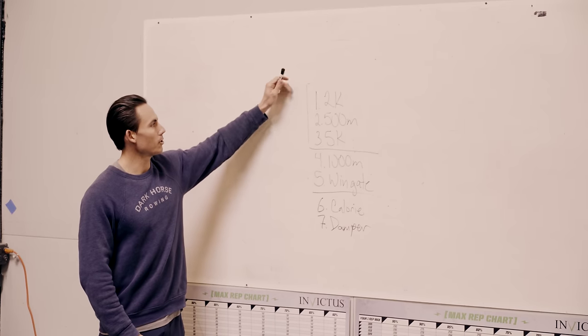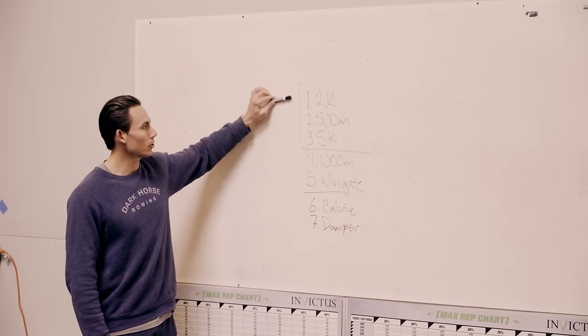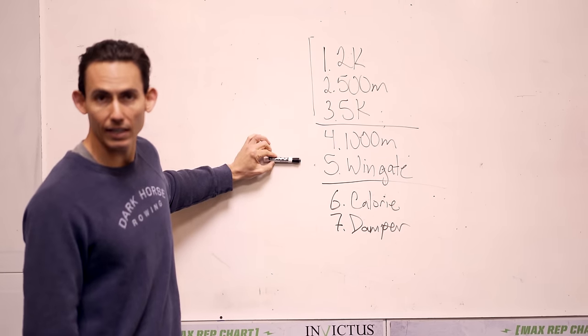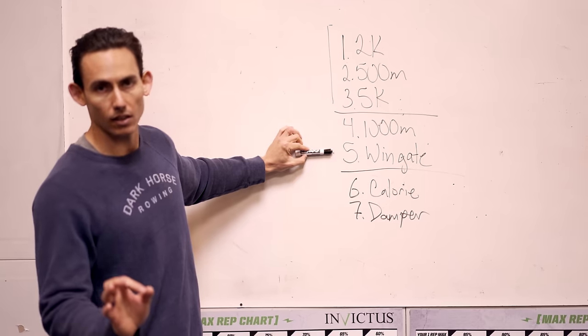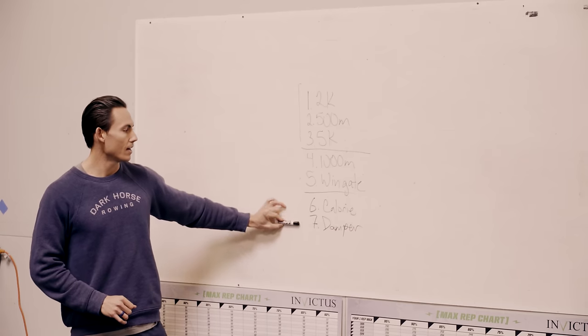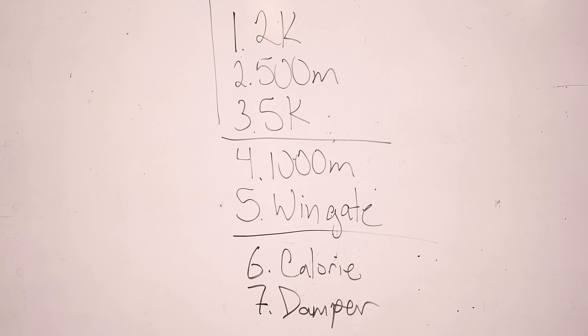So again, let's go over these. Your absolute baselines, the 2K, the 500, and the 5K. Make sure you have these under your belt. Next, most important, the 1000 and the Wingate. These are great tests to run, and also pretty easy to run. Wingate just takes a little bit of understanding, but we'll link to that in this video as well. And from here, you're going to have number six and seven, calorie and damper. These are much better for gaining understanding. And for those of you new to the machine and getting used to rowing on the Concept2, these are going to be musts for you.